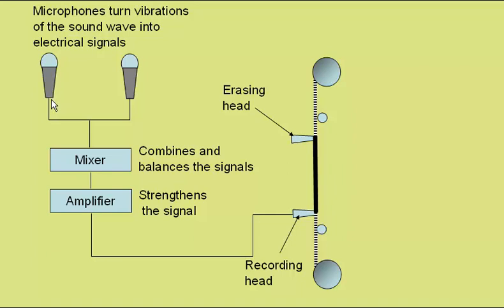These electrical signals will then pass down here to the mixer. This will combine the signals from the different microphones and balance their strengths, maybe increasing the volume of the microphone for the vocalist and reducing the volume of the drummer.